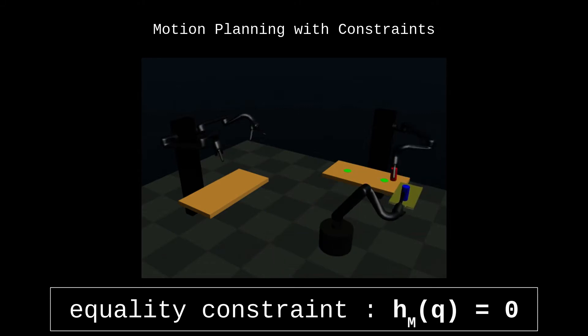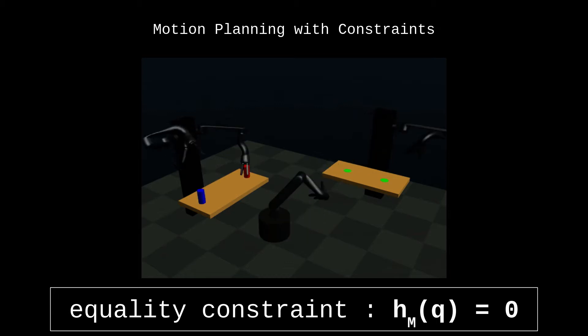One way of describing equality constraints such as these in planning is by using implicitly defined manifolds in configuration space. These manifolds M can be defined by an implicit function HM.